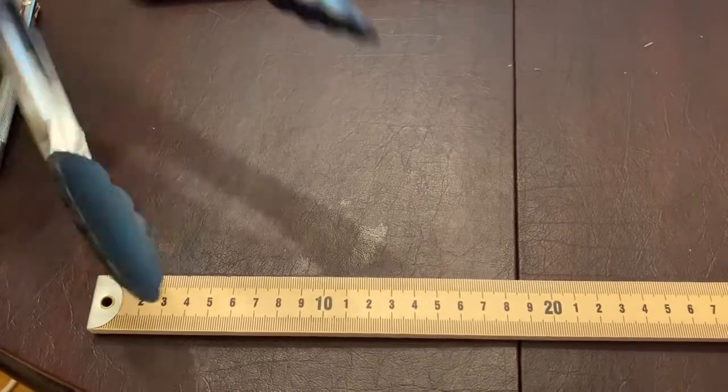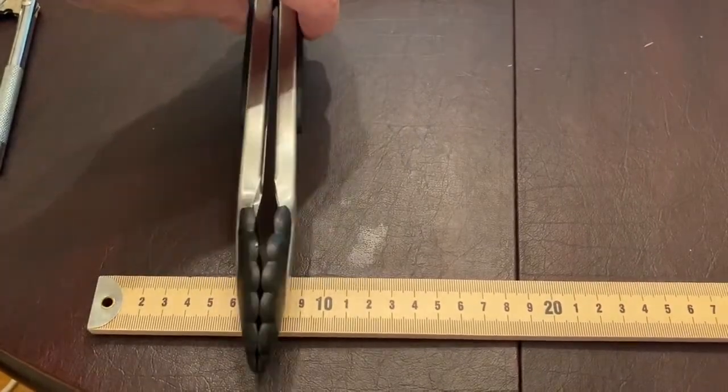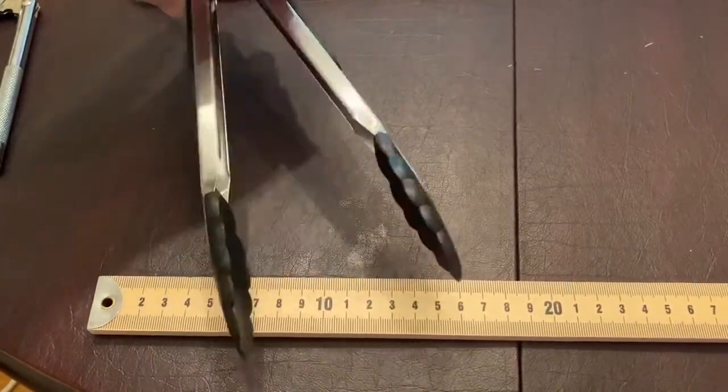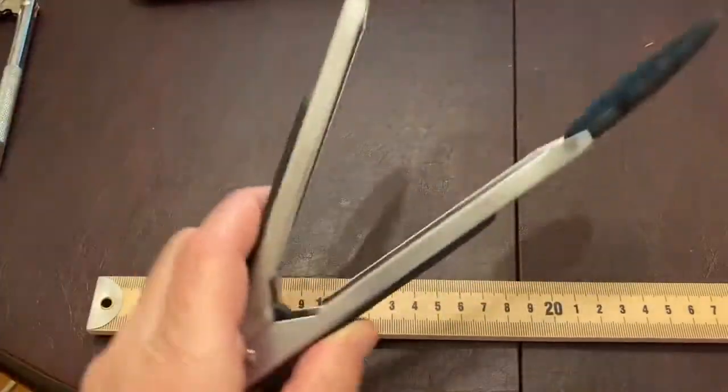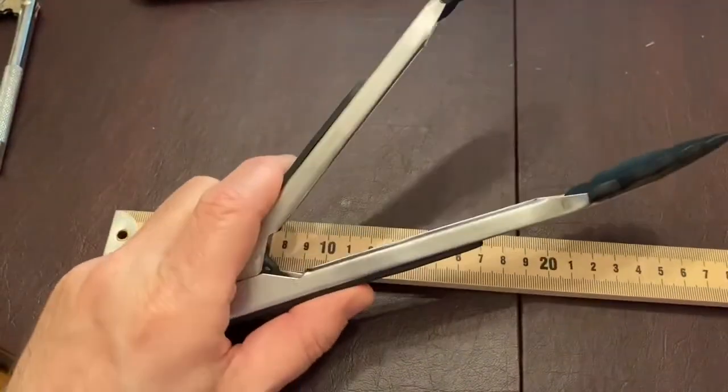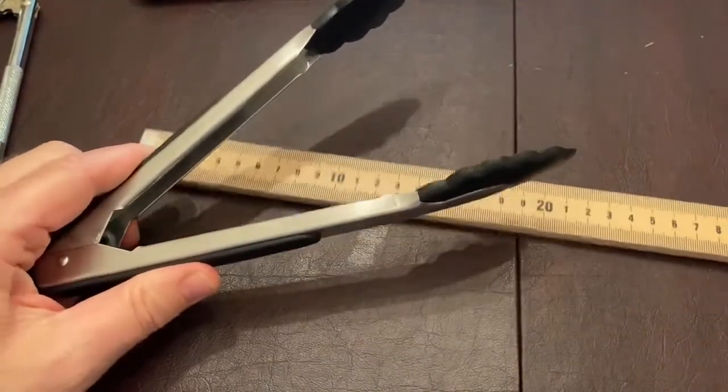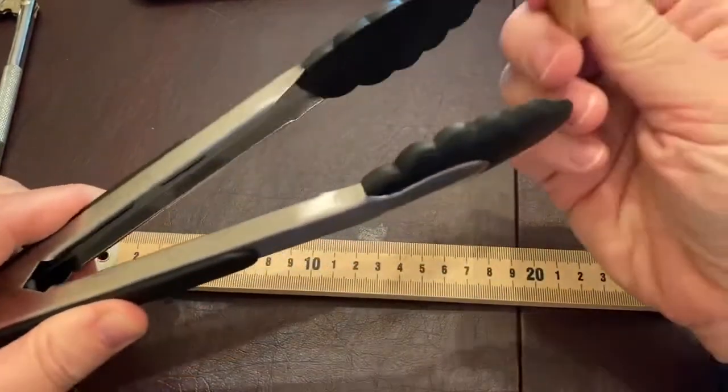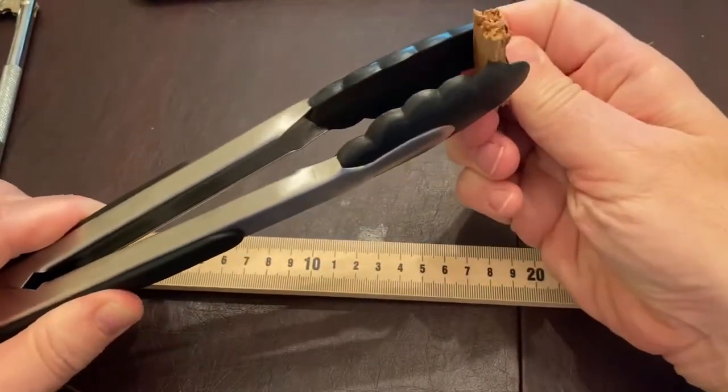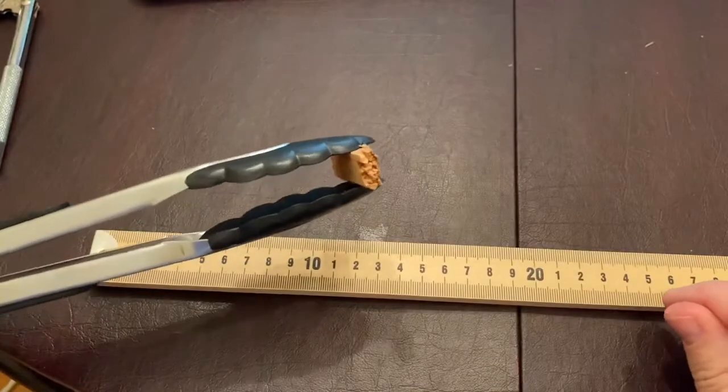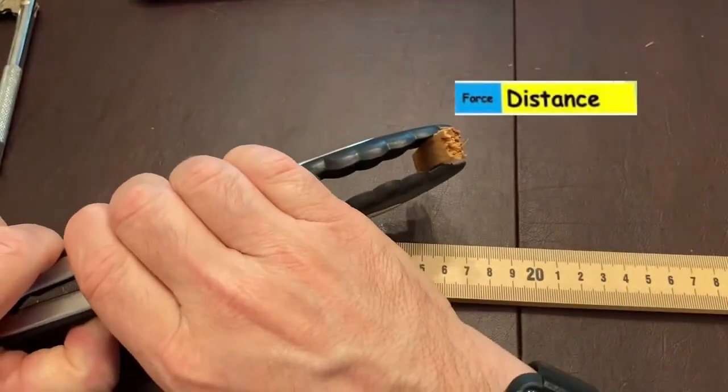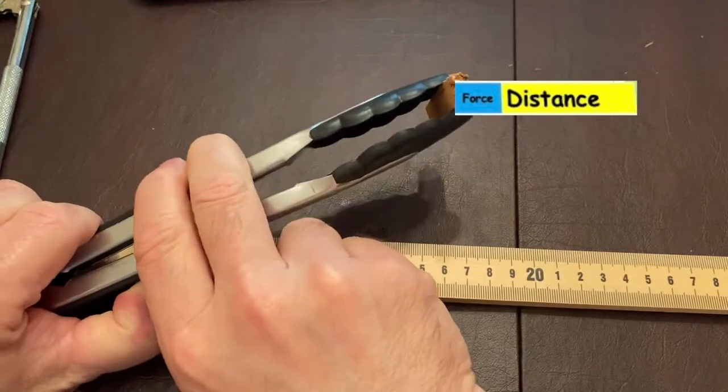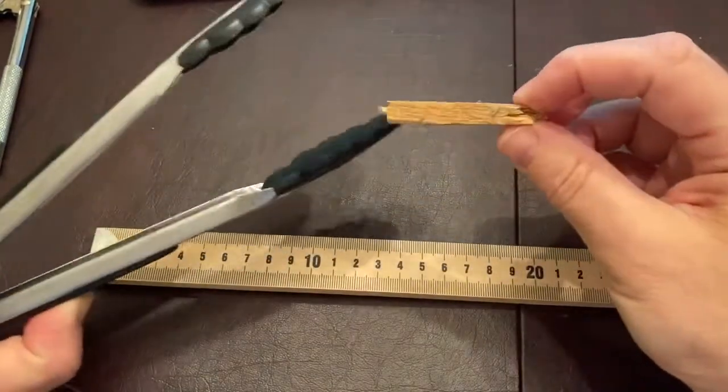So this thing is increasing the distance that my fingers are moving, so it must be decreasing the force. So let's just see if I can crush something. Here's a little piece of wood I got here. I'm going to put that in the tongs. I'm going to try and crush it. Let's see, I'm actually bending it now. It's not crushing. It's not doing really anything to it.